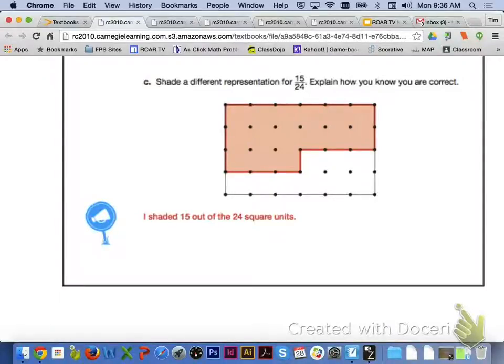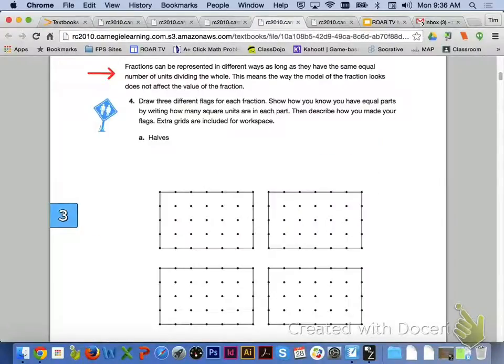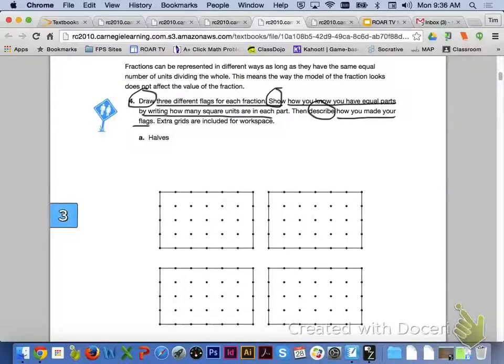Everyone's representation might look a little different for letter C. This is what we have to represent 15 twenty-fourths, and you know that you are correct because you are going to shade 15 out of the 24 square units. At the top of page 100, fractions can be represented in different ways, as long as they have the same equal number of units dividing the whole. This means the way the model of the fraction looks does not affect the value of the fraction. Now it's going to be your turn to draw different flags for each fraction that is going to be represented on the following pages.